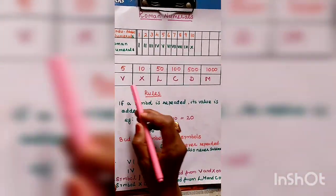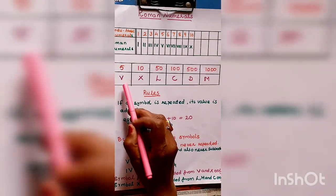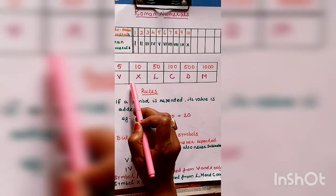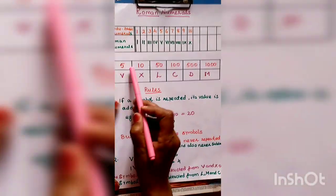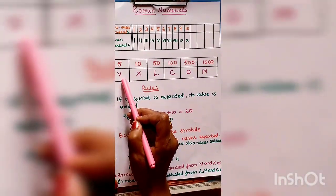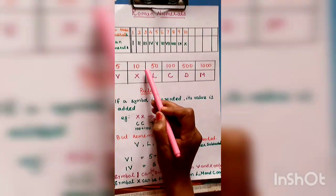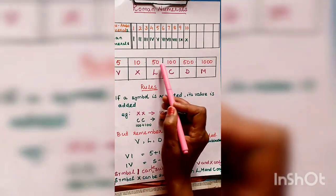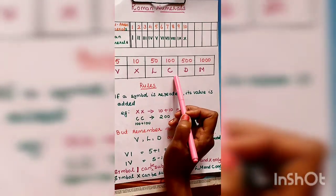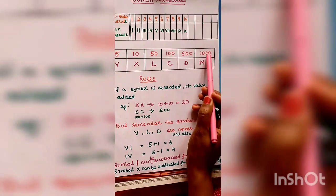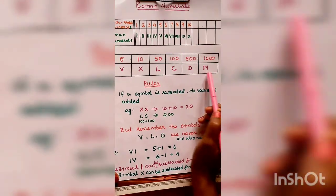Some key Roman numeral symbols: five is V, ten is X, fifty is L, hundred is C, five hundred is D, and thousand is M. Using these symbols and rules, you can write any Roman numeral.